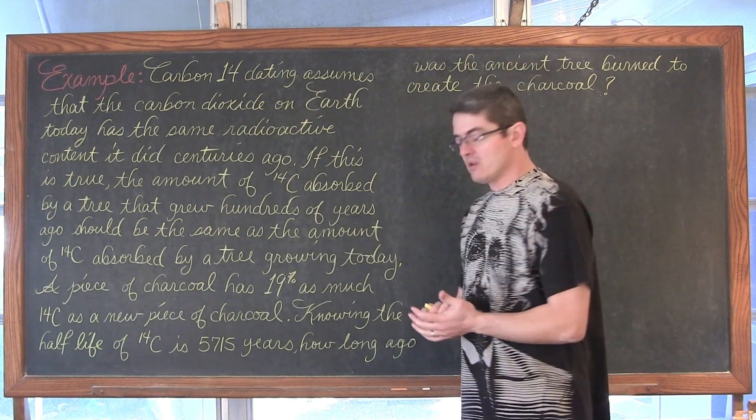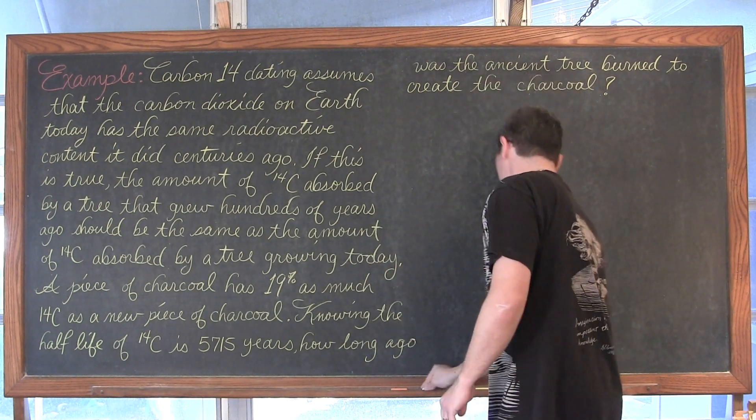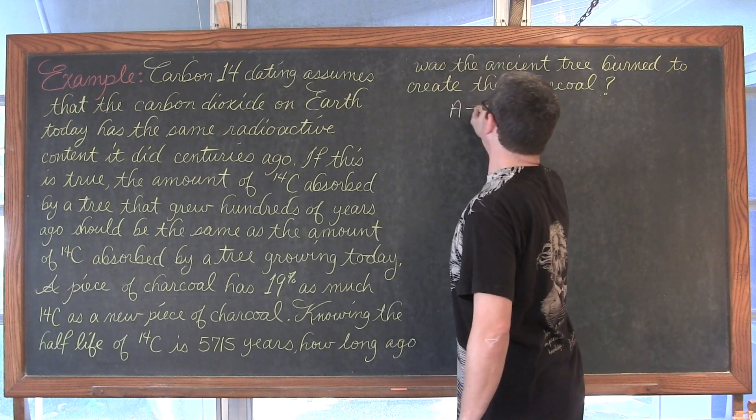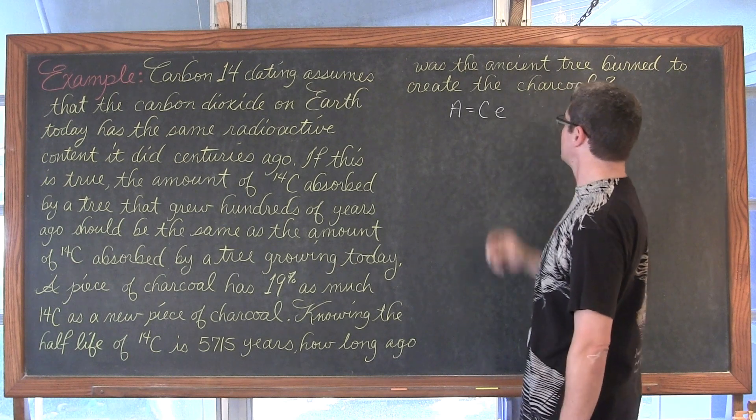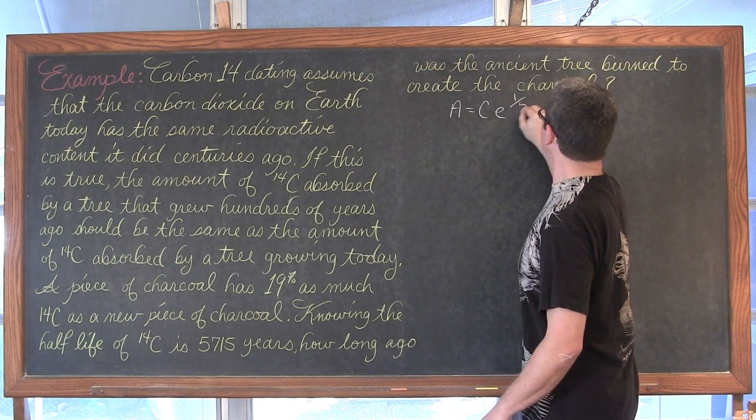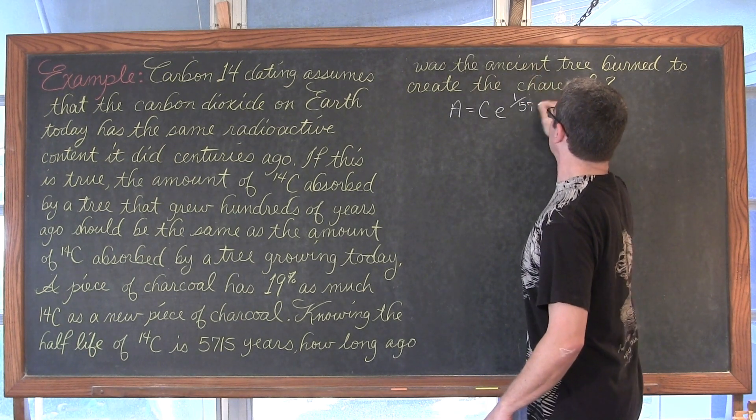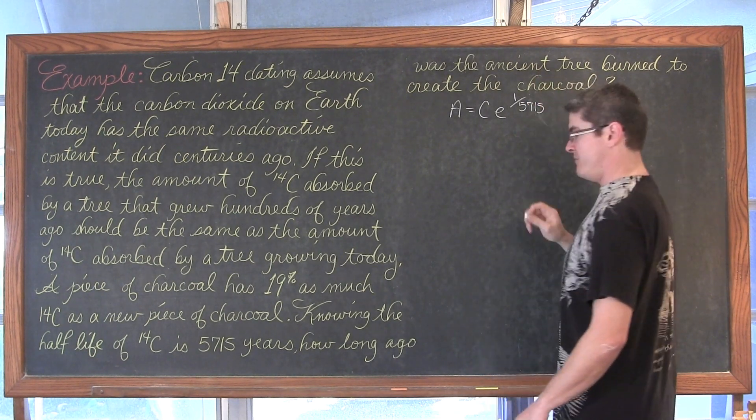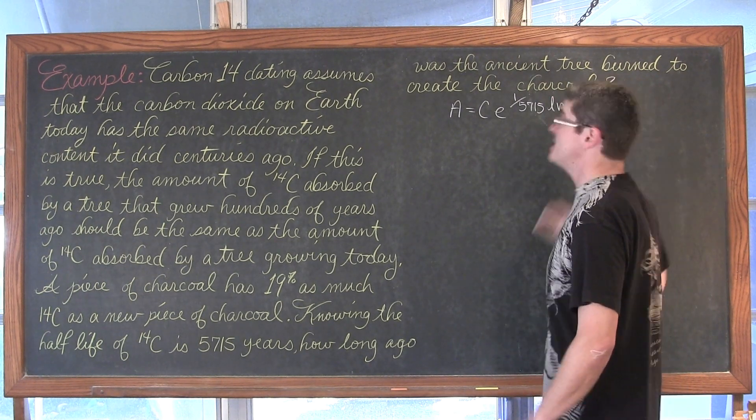Now that we know the constant, we can write our equation. We have our final amount is going to be equal to our initial amount times e to the 1 over 5715 times the natural log of one-half times t power.